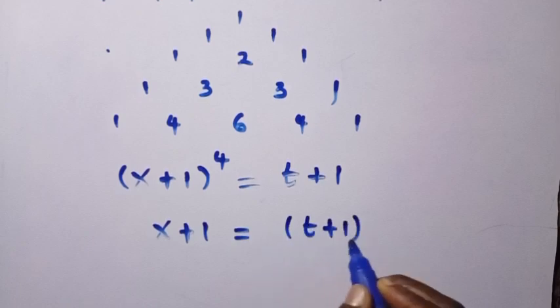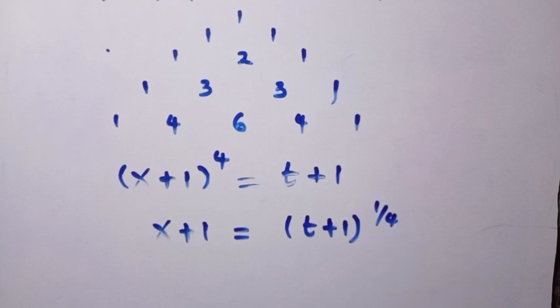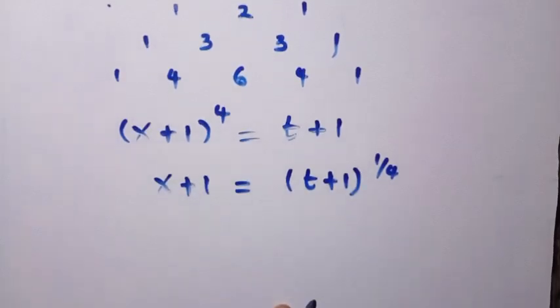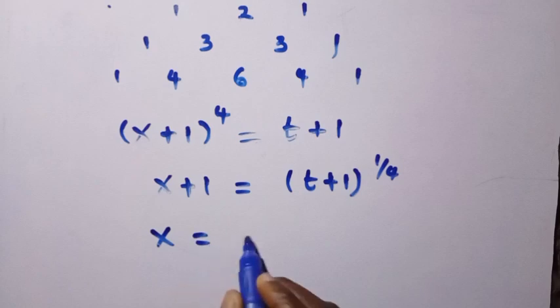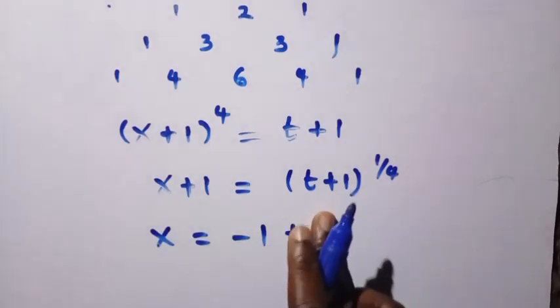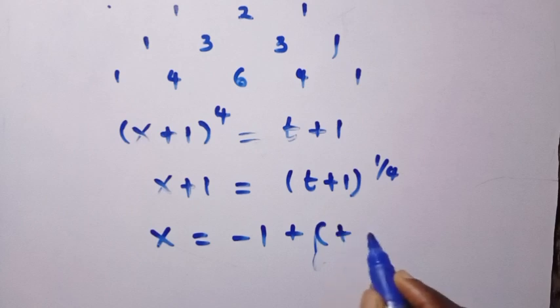(t + 1)^(1/4). So we have x = -1 + (t + 1)^(1/4).